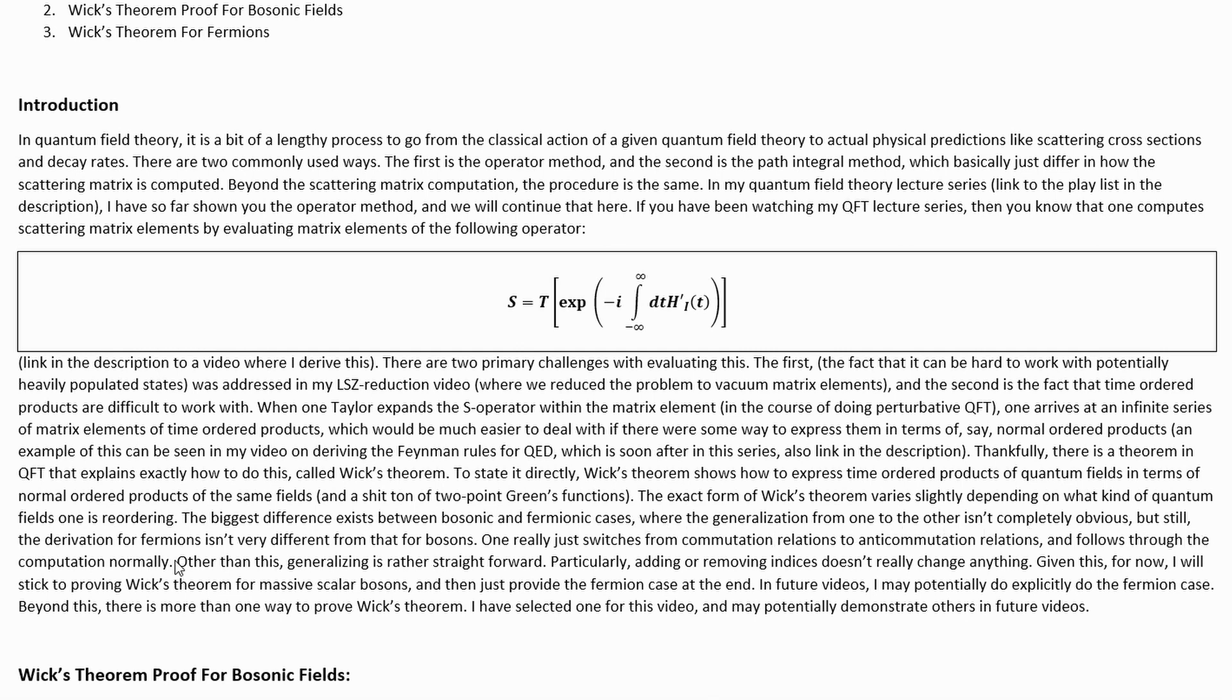but still, the derivation for fermions isn't very different from that for bosons. One really just switches from commutation relations to anticommutation relations, and follows through the computation normally. Other than this, generalizing is rather straightforward, particularly adding or removing indices doesn't change much. Given this, for now, I will stick to proving Wick's theorem for massive scalar bosons, and then just provide the fermion case at the end.